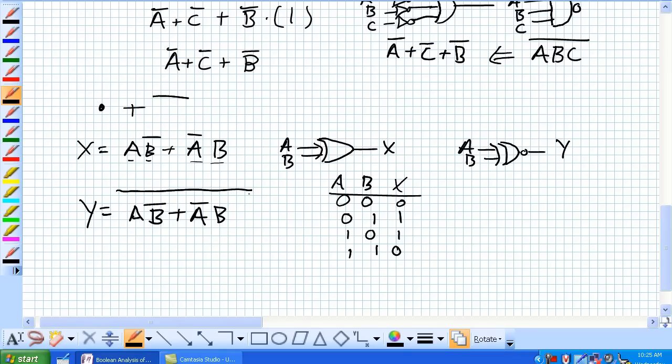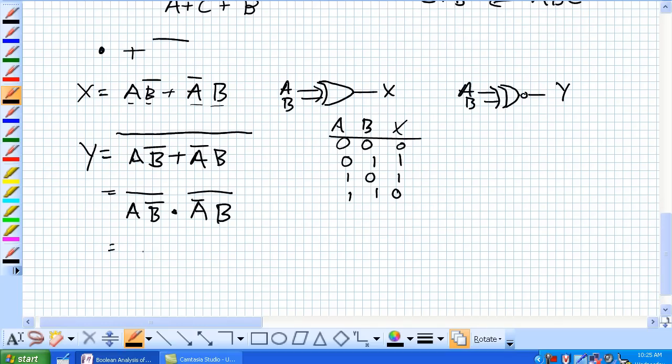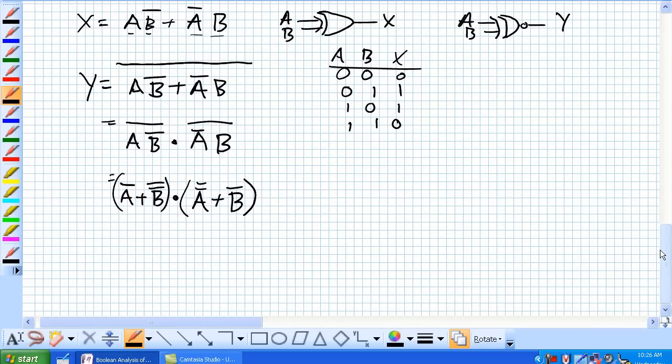So how do you do this using De Morgan's Theorem and some of our laws here? So you can split this thing up this way using De Morgan's Theorem. Using it again, but what happens with a double negation?